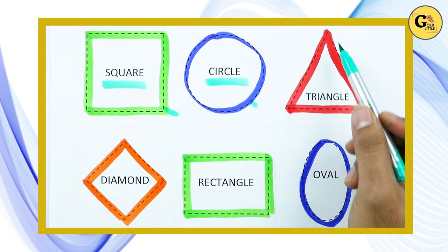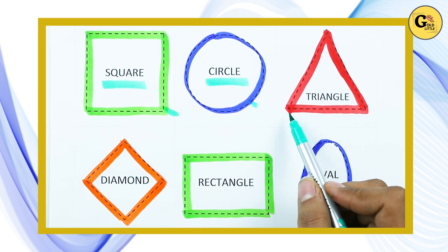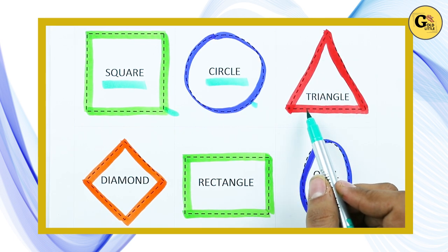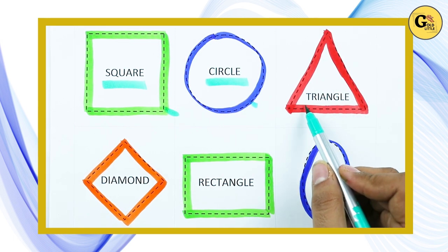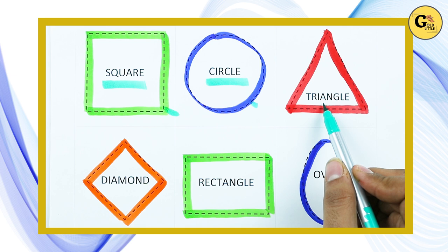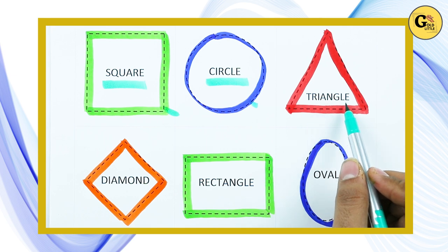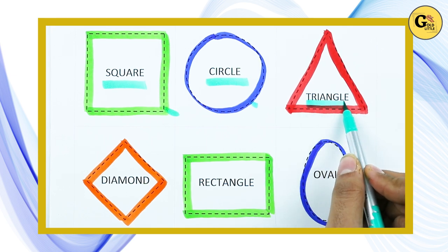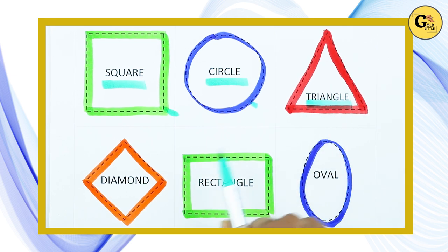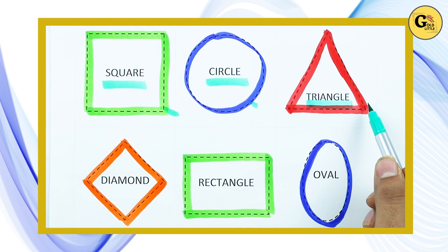Which shape is this? Triangle. T-R-I-A-N-G-L-E. It's a triangle with red color.